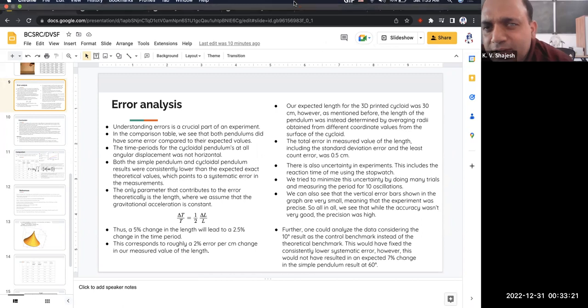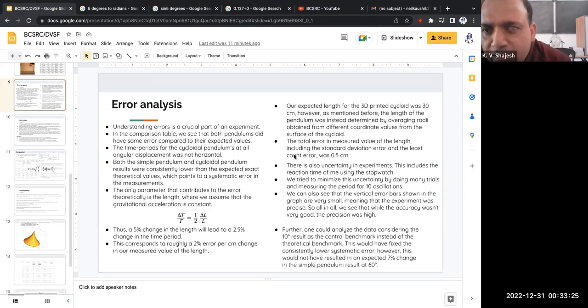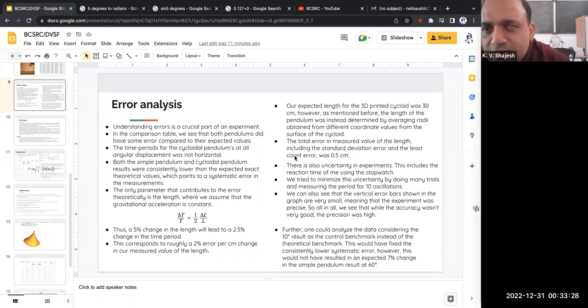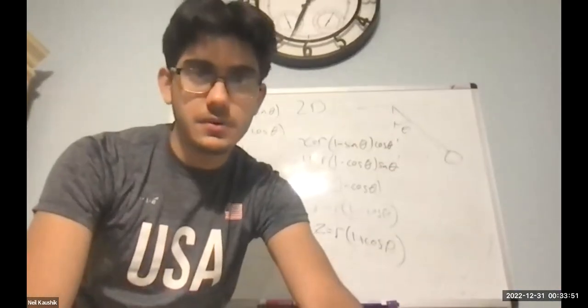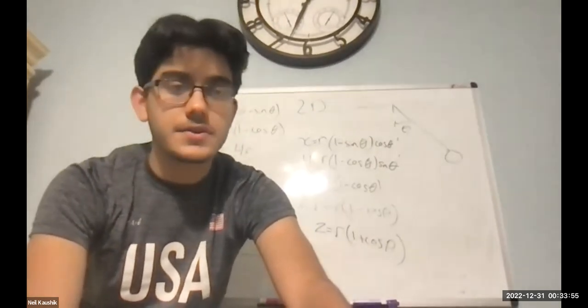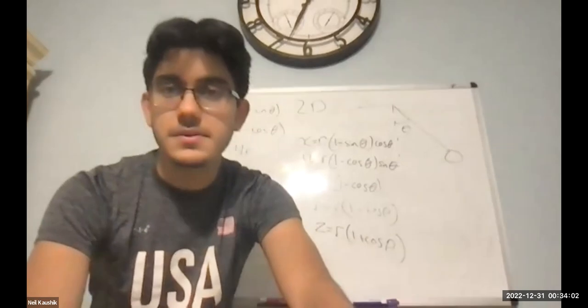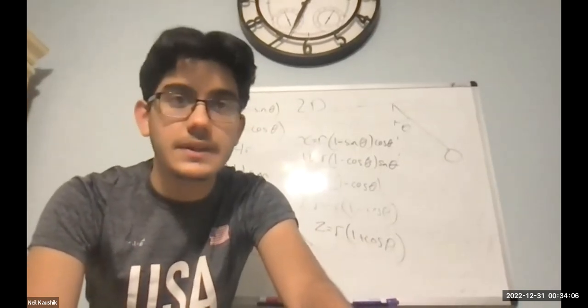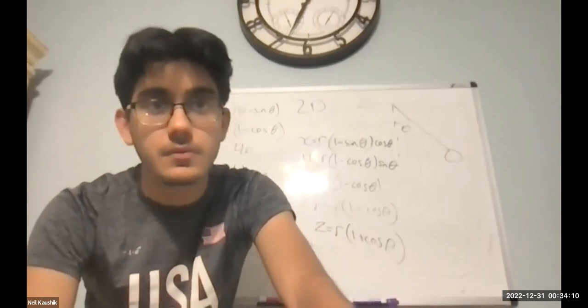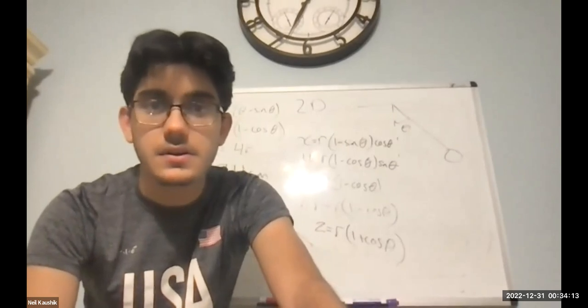The error can't be mainly from the length because the derivation assumed you have a cycloidal surface, and that surface was not perfect. So the equation is not perfect, and indirectly it depends on the cycloid shape. Would I be right? The length does have a contribution — we showed statistically that the smallest change in length could result in a large change in the time period. But when measuring the cycloid, we did have a problem with the length and getting the correct radius.